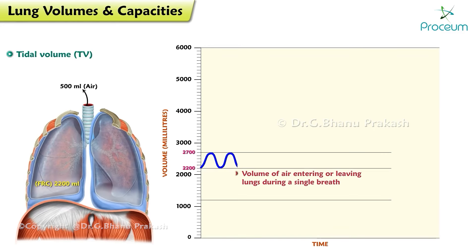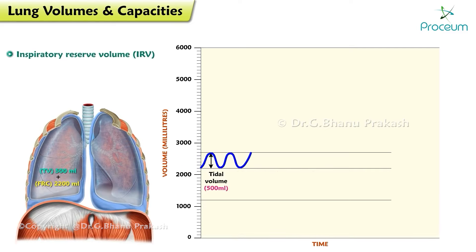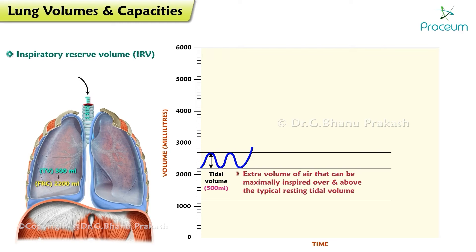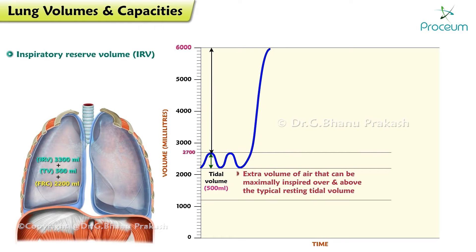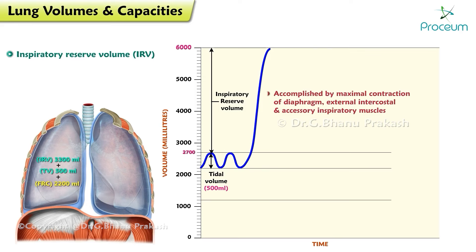Tidal volume: the volume of air entering or leaving the lungs during a single breath. The average value under resting conditions is 500 milliliters. Inspiratory reserve volume: the extra volume of air that can be maximally inspired over and above the typical resting tidal volume. It is accomplished by maximal contraction of the diaphragm, external intercostal muscles, and accessory inspiratory muscles. Average value of inspiratory reserve volume is 3,300 milliliters.